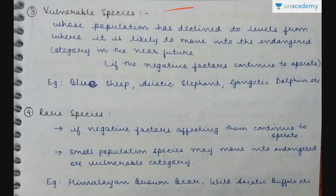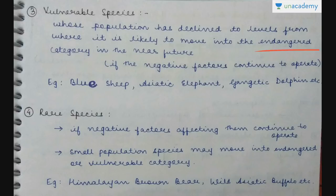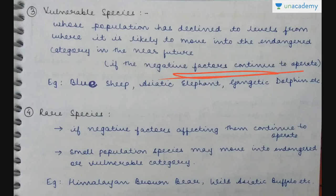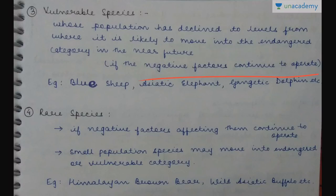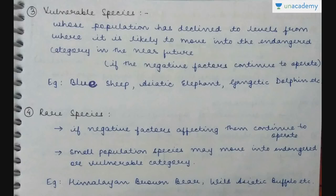Vulnerable species are those whose population has declined to levels from where it is likely to move into the endangered category in the near future. They are at risk, and if the negative factors continue to operate, they may end up entering the endangered category. Examples include blue sheep, Asiatic elephant, and Gangetic dolphin.